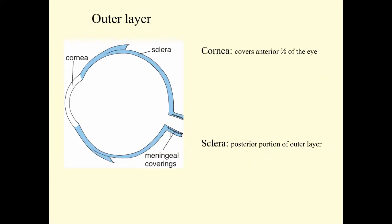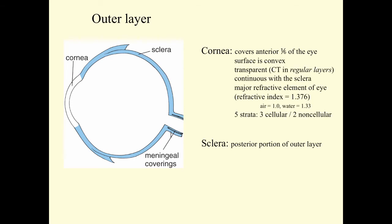The cornea covers about one-sixth of the anterior portion of the eye. The surface is convex. It's transparent because there's connective tissue arrayed in regular layers. The cornea is continuous with the sclera. The cornea is the major refractive element in the eye, with a refractive index of 1.376. The refractive index of air is considered 1, and the refractive index of water is 1.33. The cornea is divided into five strata. There are three cellular strata and two non-cellular strata.